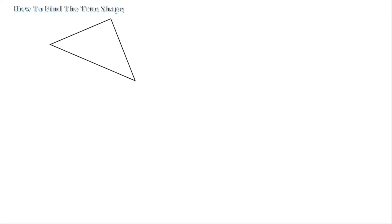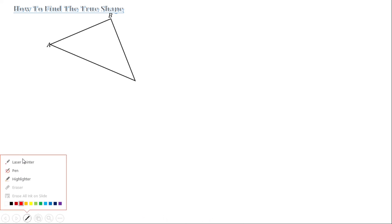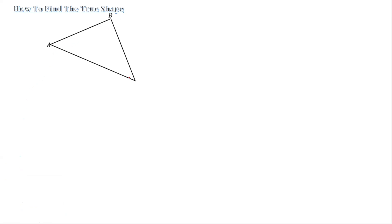So a plane will be given to us — in this case a triangle, which is the front view. Let's label it: we have our A here, our B here, and automatically here becomes C.